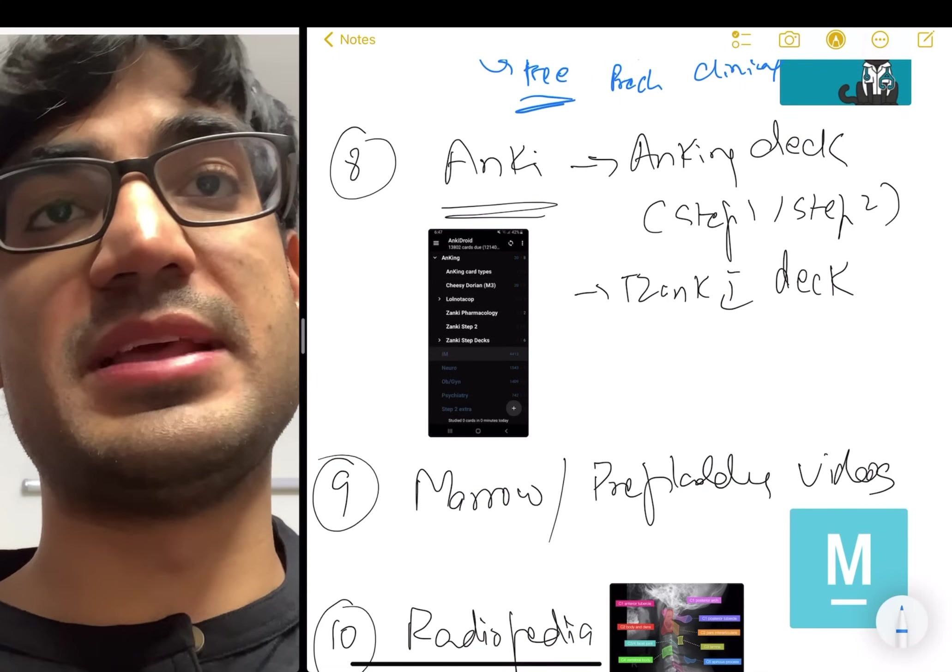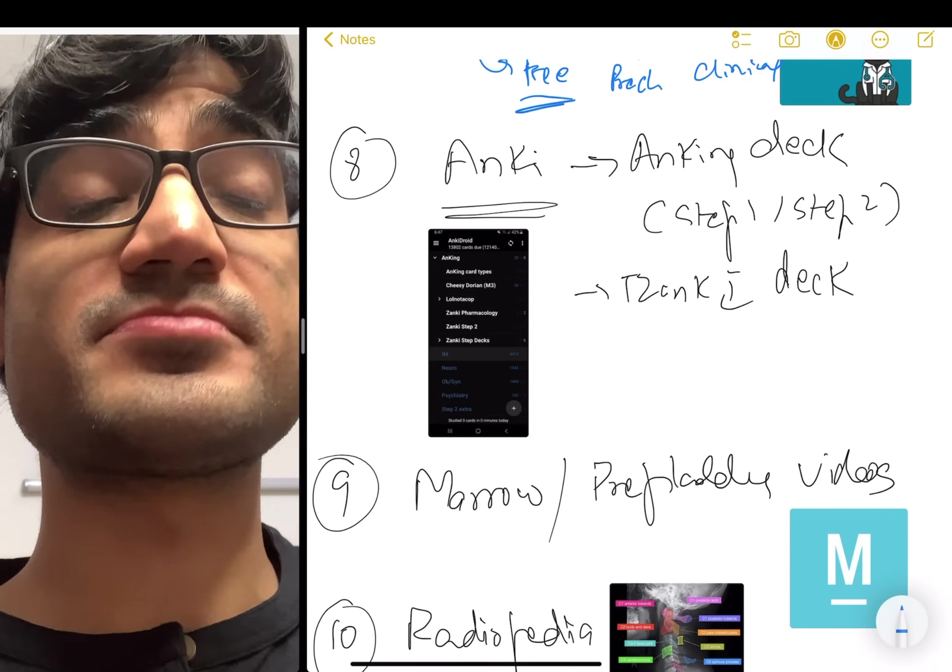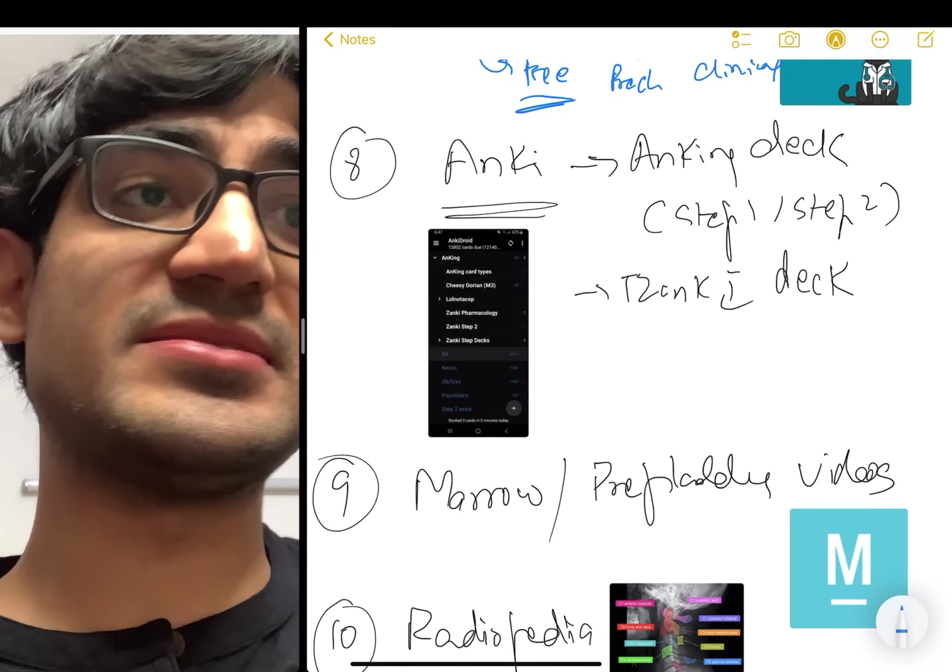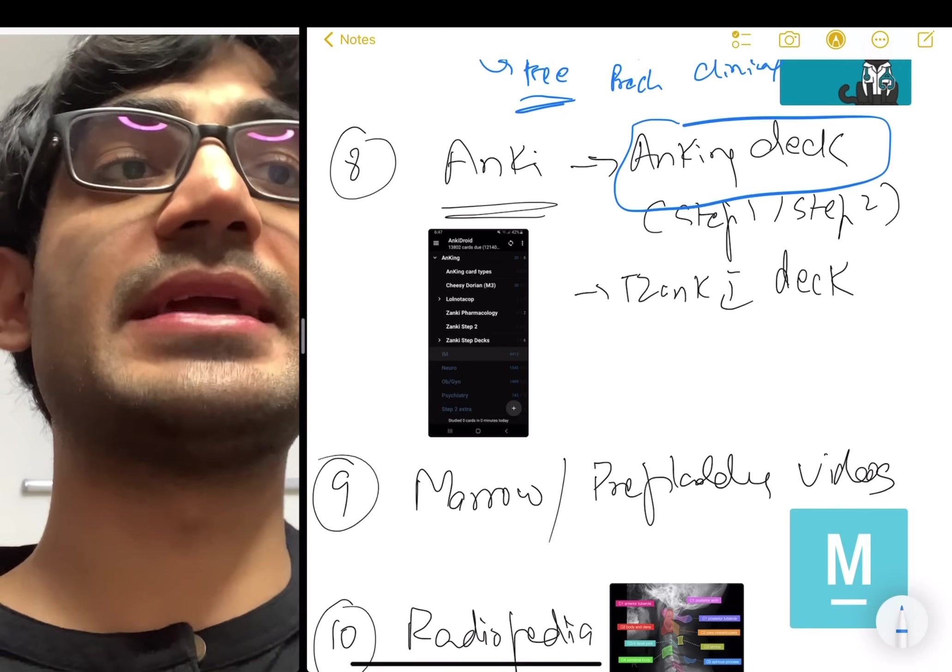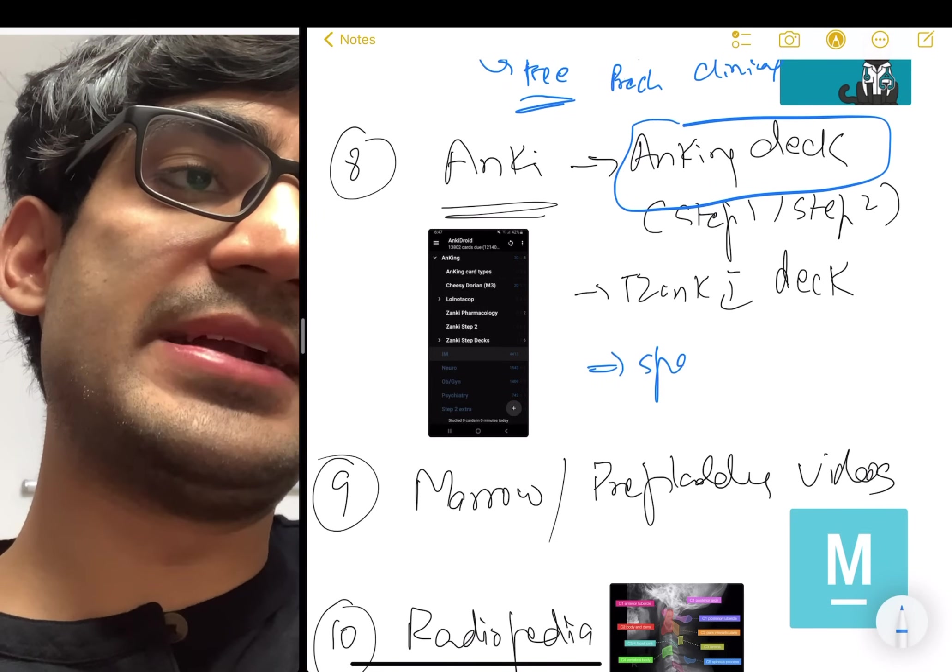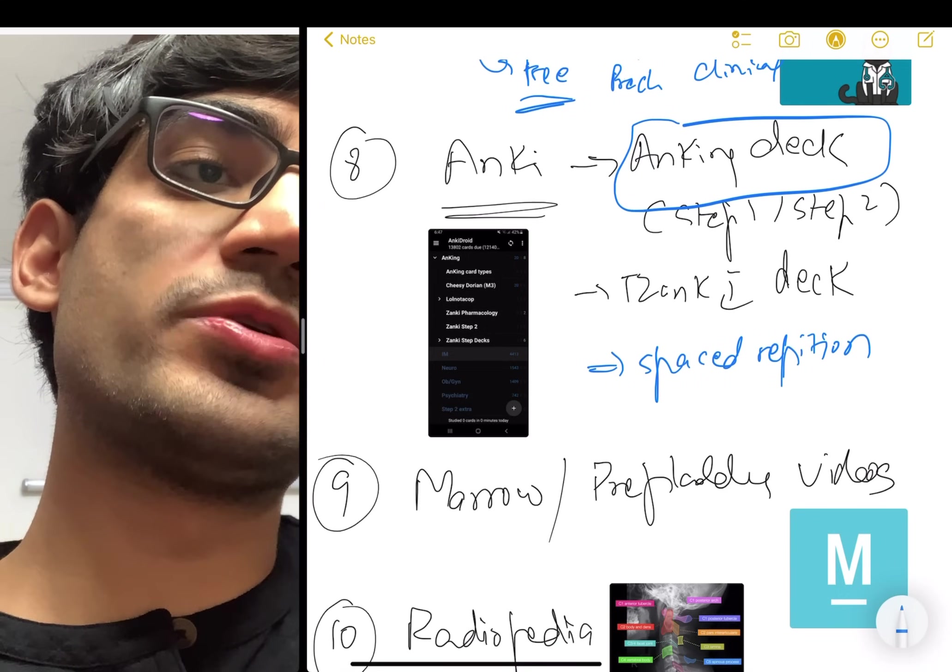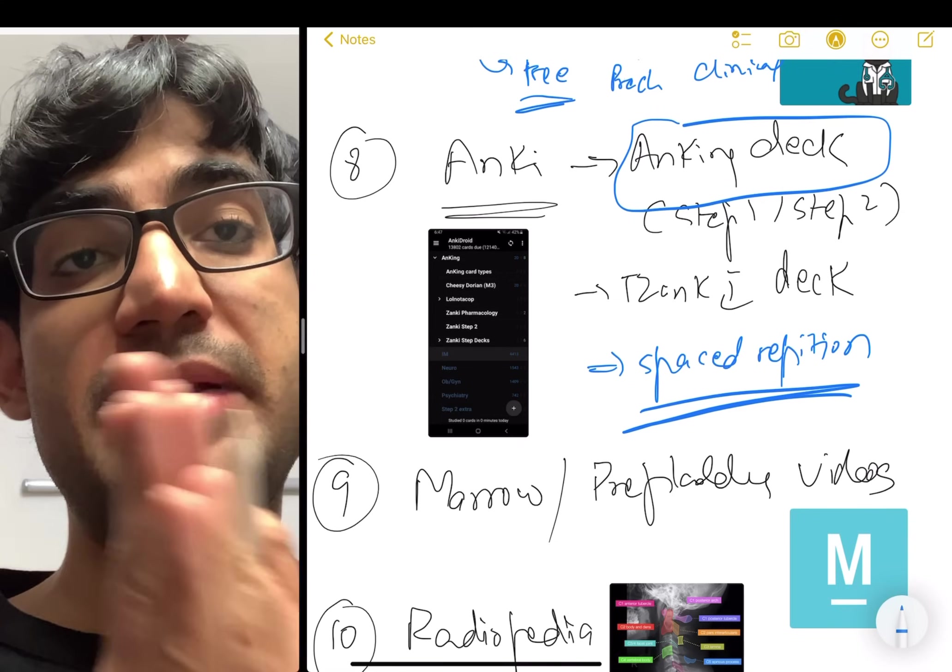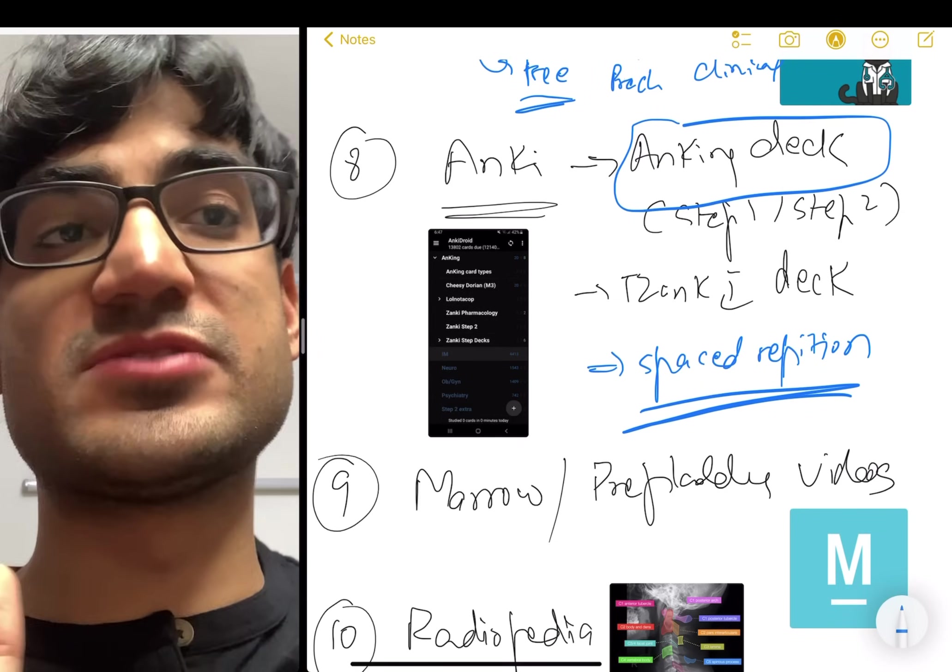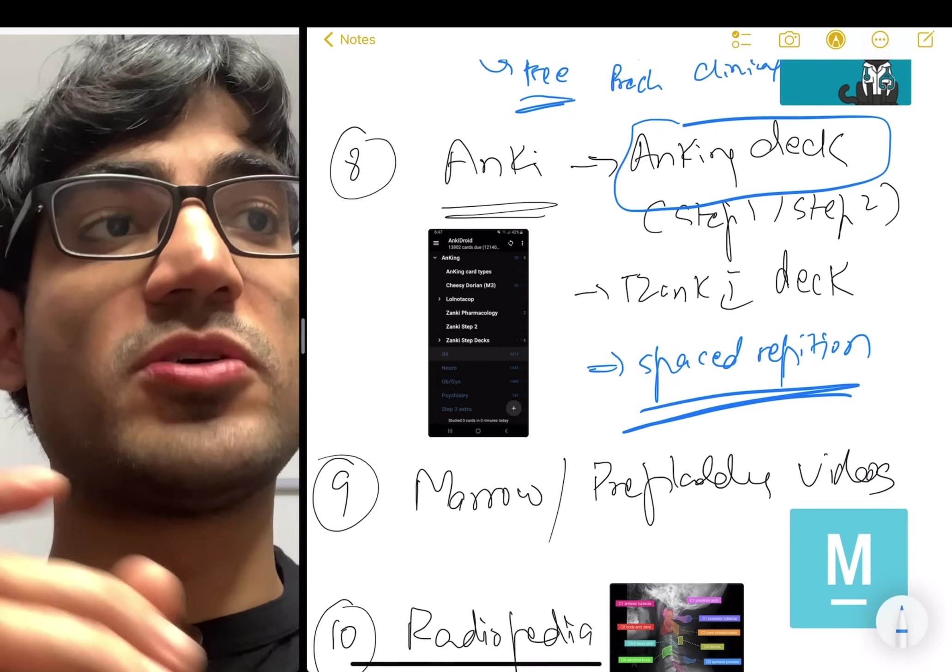The eighth resource I would recommend is Anki. So let's say you got into med school. The first thing I would advise you to get something is called the Anking deck. So what is first of all Anki? Anki is spaced repetition. This is a spaced repetition software and spaced repetition has been shown to improve retention and beat the forgetting curve so that you remember things for a very long period of time. And this is very helpful.